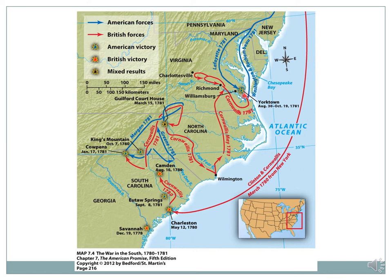The French Navy was going to fight a big naval battle with the British right at the mouth of the Chesapeake, which ended up being a French victory. As a result, the British — Cornwallis and his army — were stuck at Yorktown.